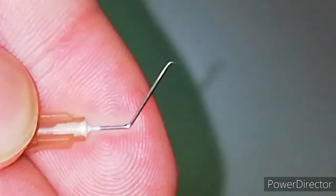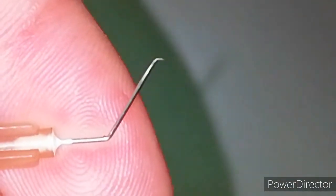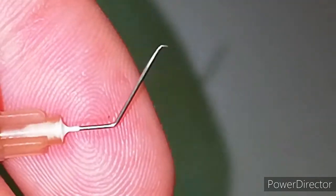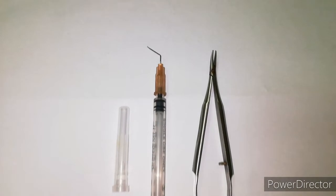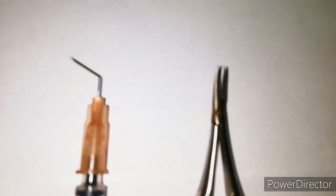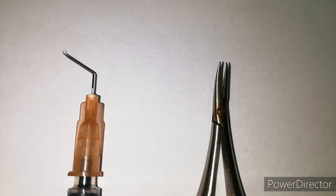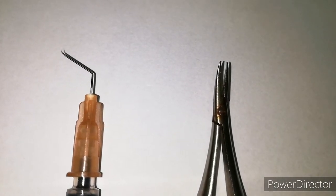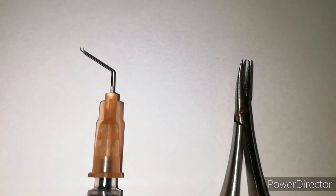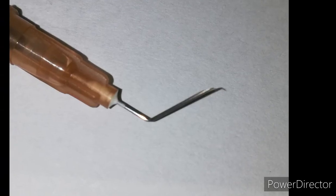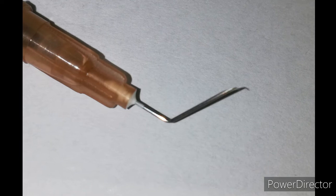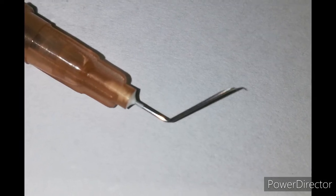So our cystotome is ready for a nice and round capsulorhexis. This is a very simple technique to make a cystotome and every resident should know how to make one. If you don't have capsulorhexis forceps, you can use a 26 gauge needle for capsulorhexis. Thank you very much.